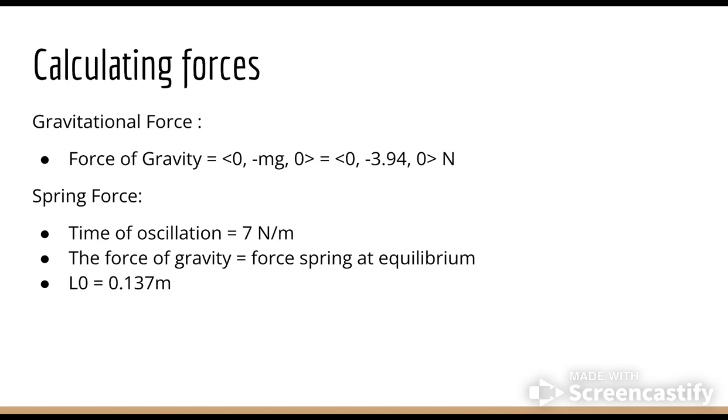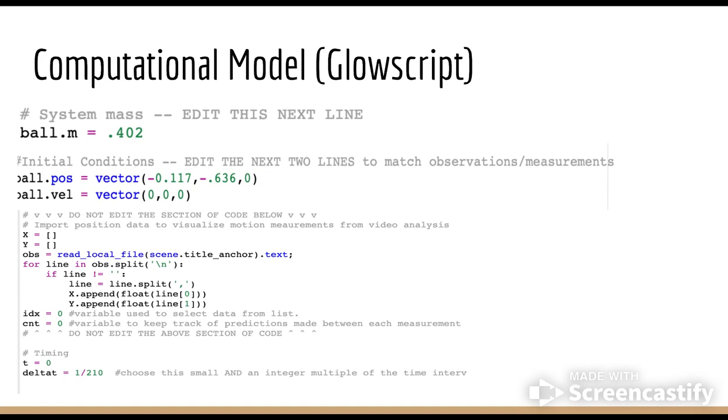Now we can take this information and plug it into our code on GlowScript. The initial position, ball mass, and initial velocity are the same ones used in the Tracker software. Delta T is taken to be relatively small to have more accurate iterations. We plug in the relaxed length and the spring constant previously calculated.